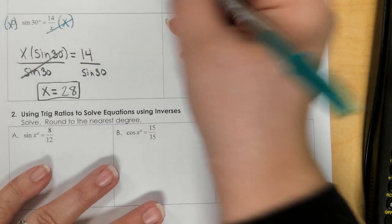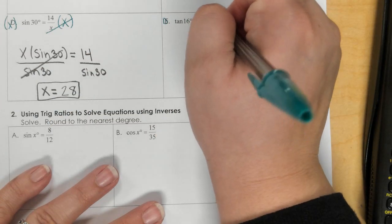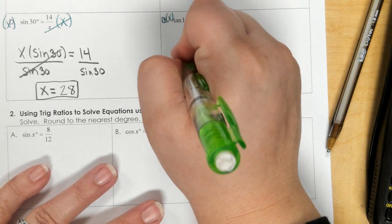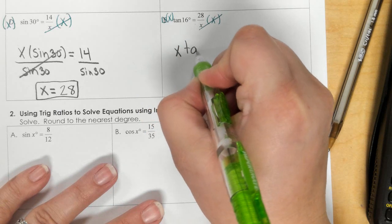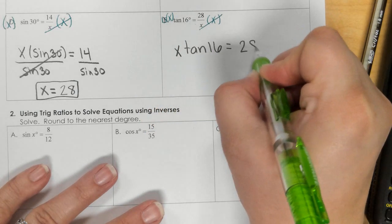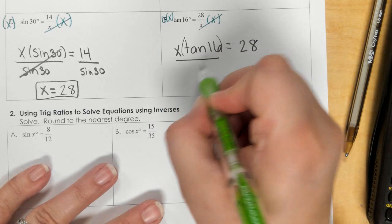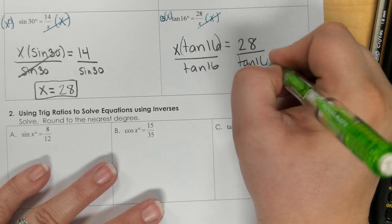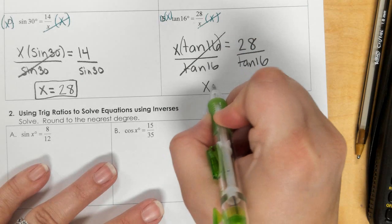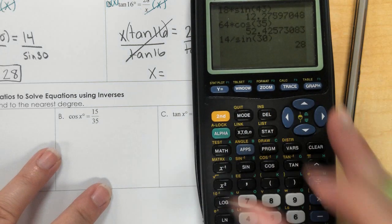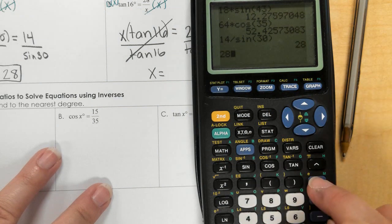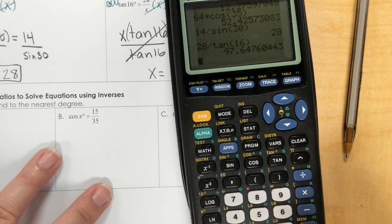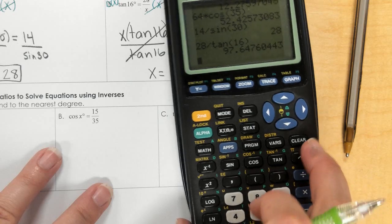Oh, that should be A, B, C, D. So we're going to multiply both sides by x. And we get x times tan of 16 equals 28. Now, we need to divide by tan of 16. And get 28 divided by tan of 16 degrees, close parenthesis, 97.6.